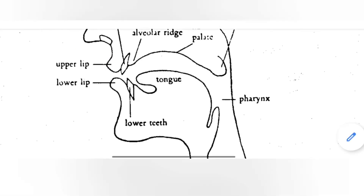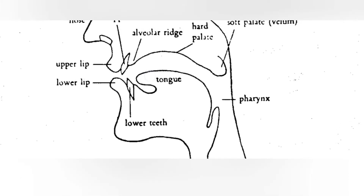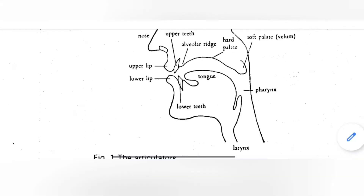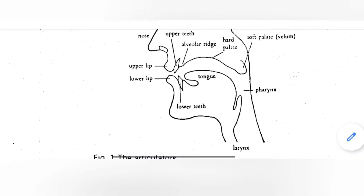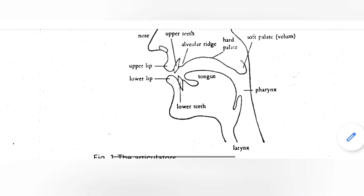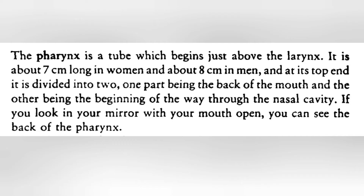In this diagram you can see the nose, upper lip, lower lip, tongue, and lower teeth.